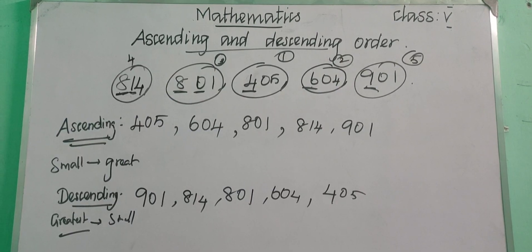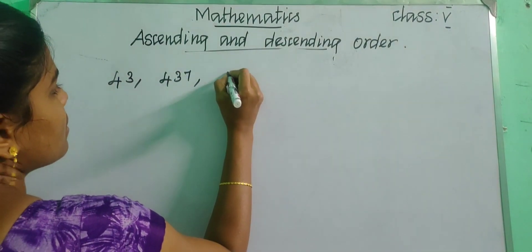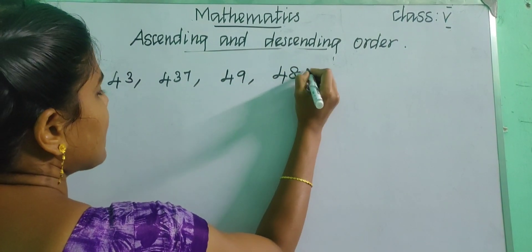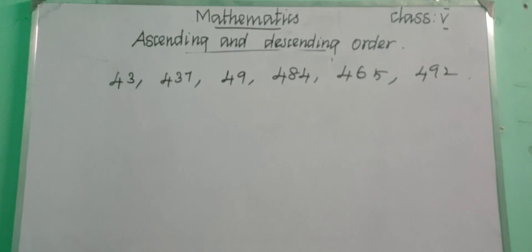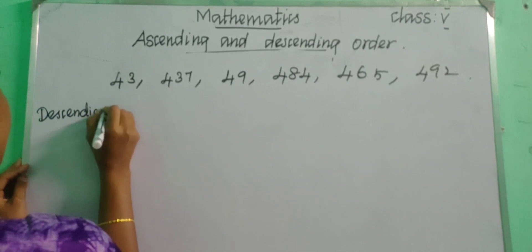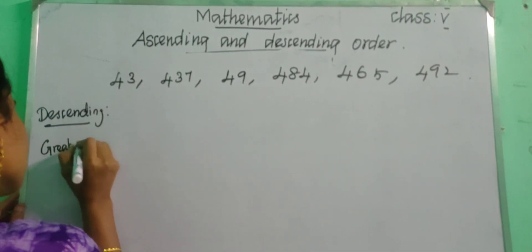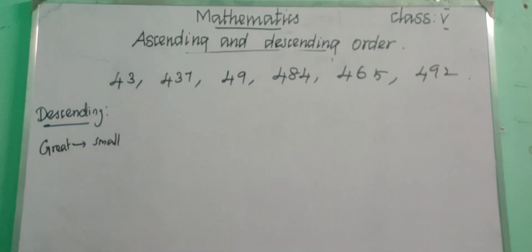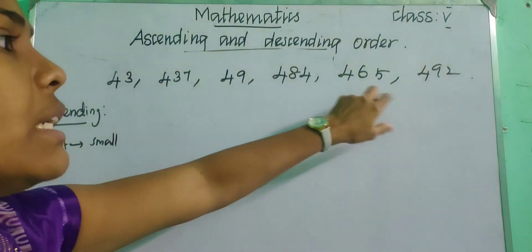Let us see another example. If you are having the numbers 43, 437, 49, 484, 465, and 492 — how will you arrange in descending order? Descending order means great to small. First of all we need to check the number of digits. Here 43 and 49 are two-digit numbers, and 437, 484, 465, 492 are three-digit numbers. The two two-digit numbers are the smallest.